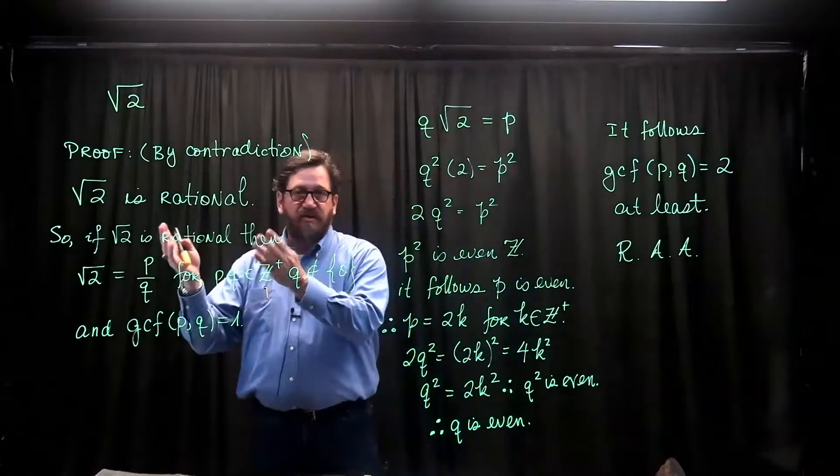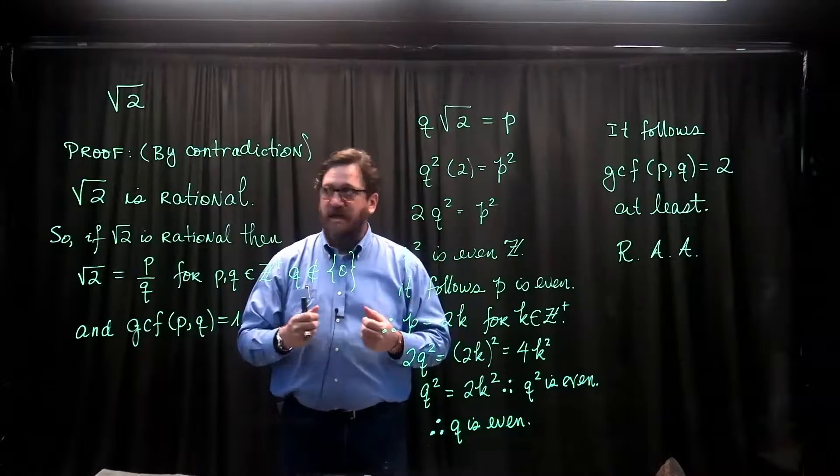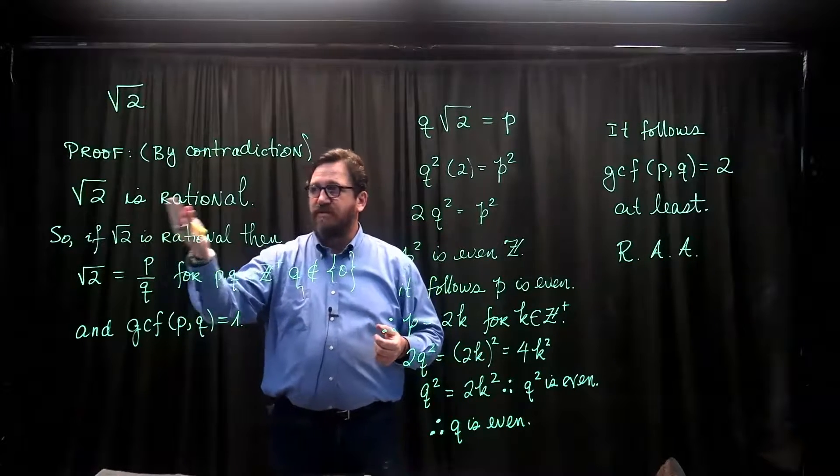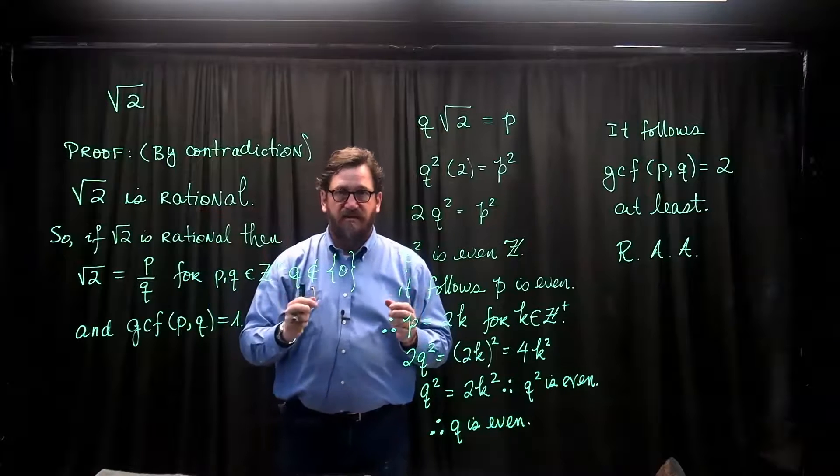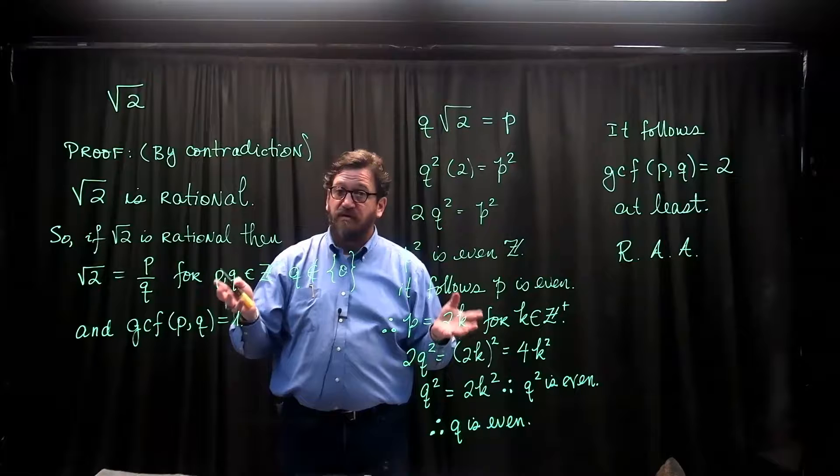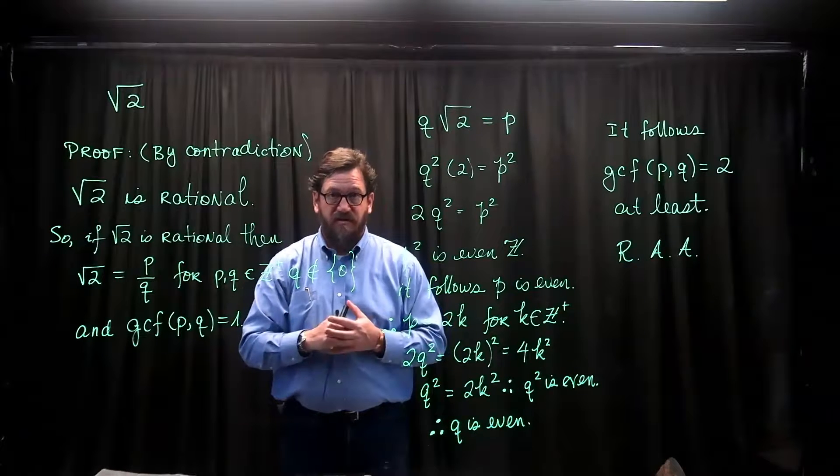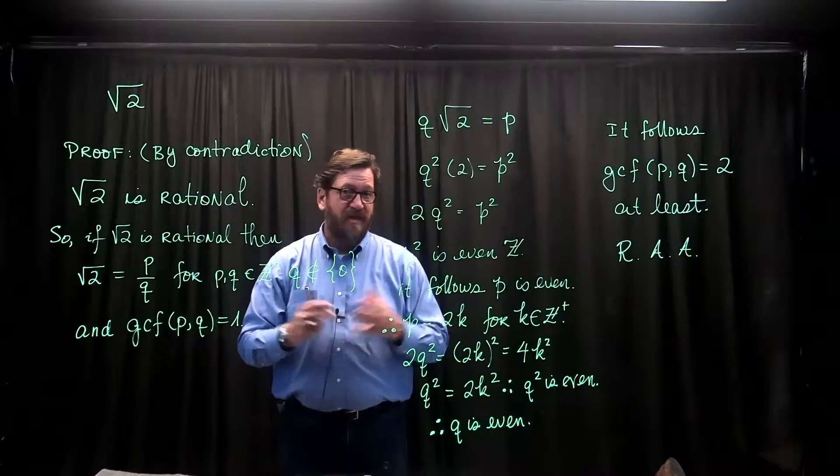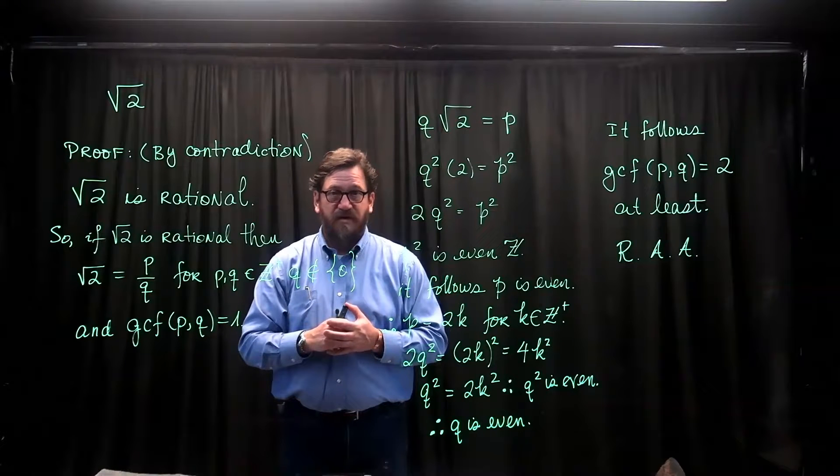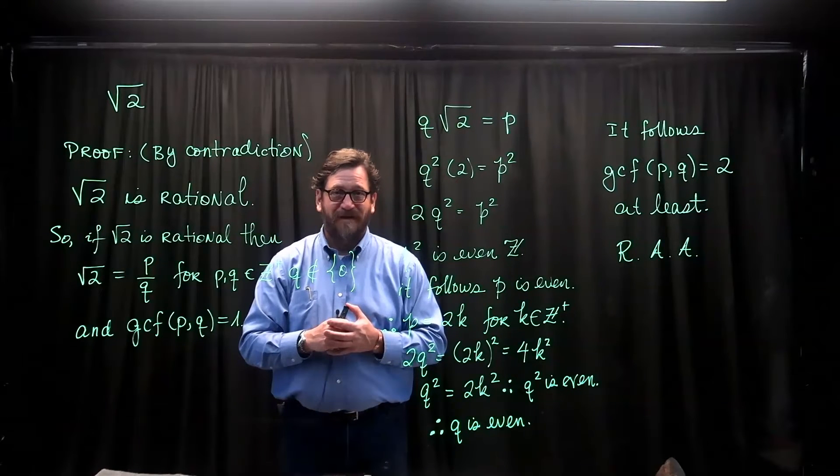Therefore, the thing that we assume to be true makes no sense. The square root of 2 is rational makes no sense. Therefore, the only thing you can conclude is the square root of 2 is not rational: irrational. There you go. Reductio ad absurdum. I hope this helps.